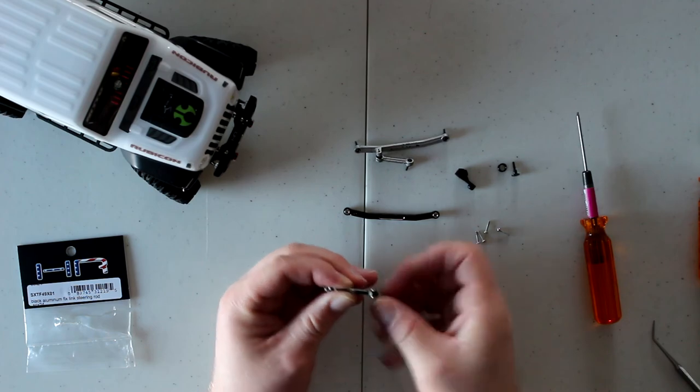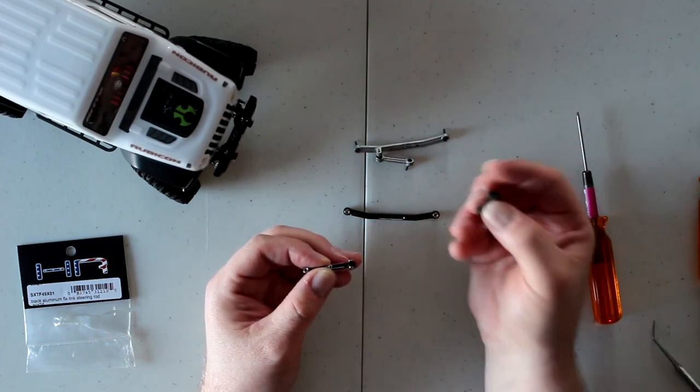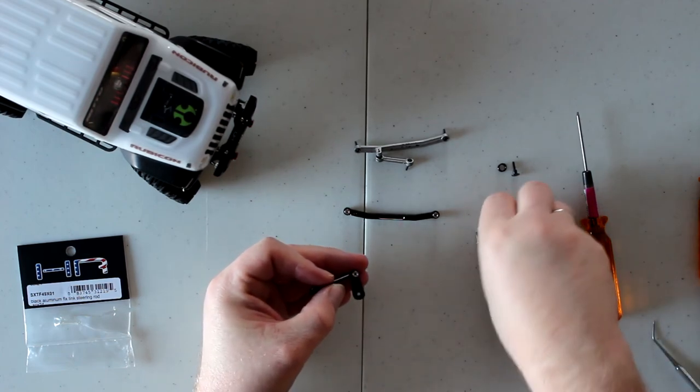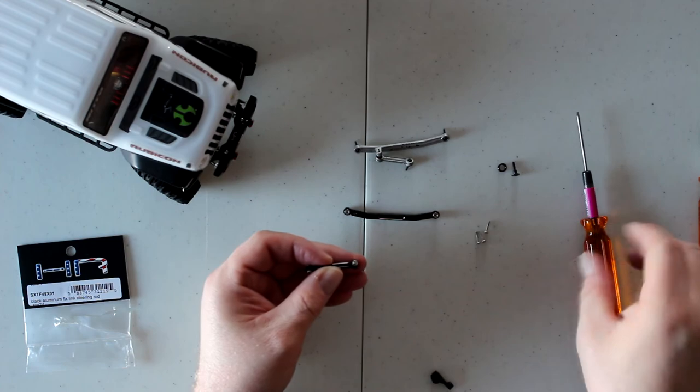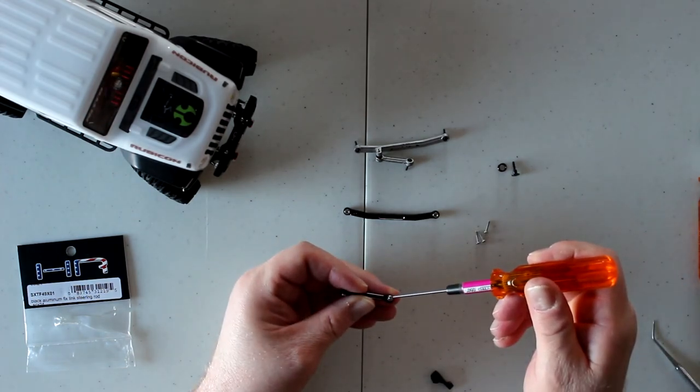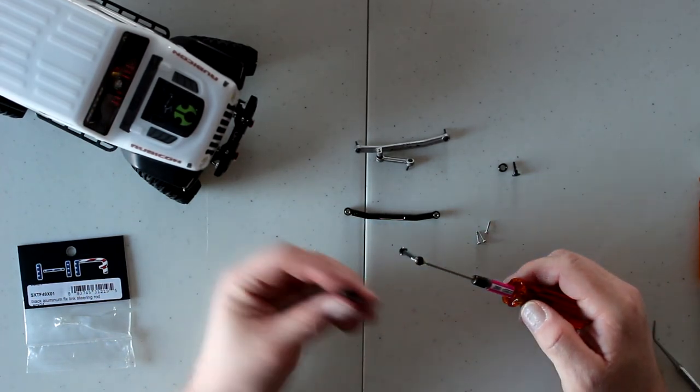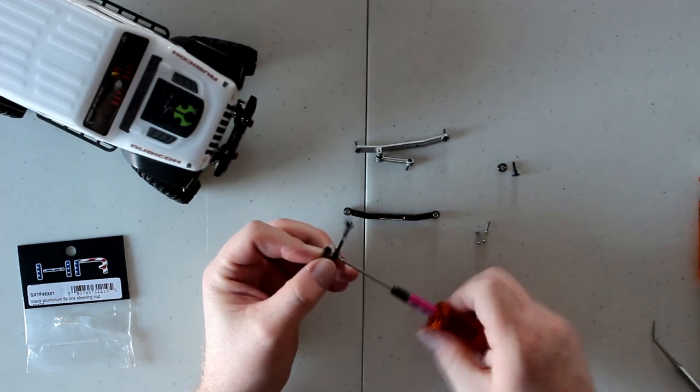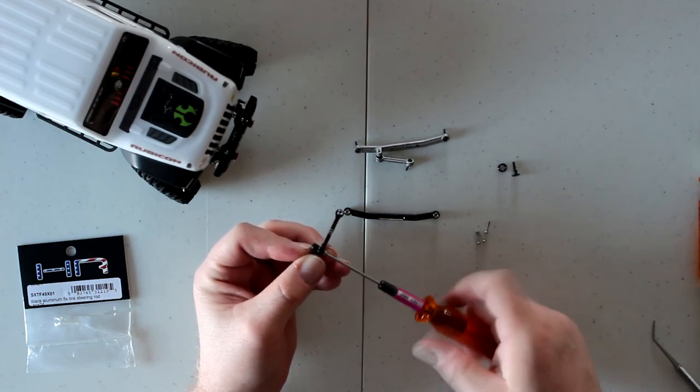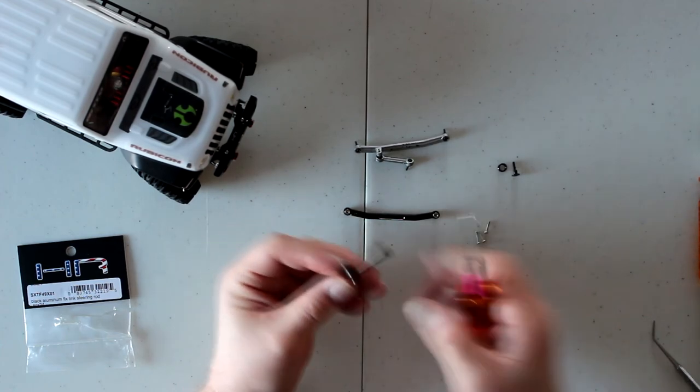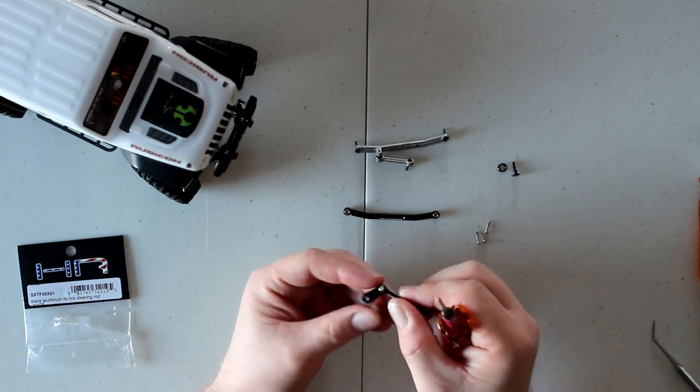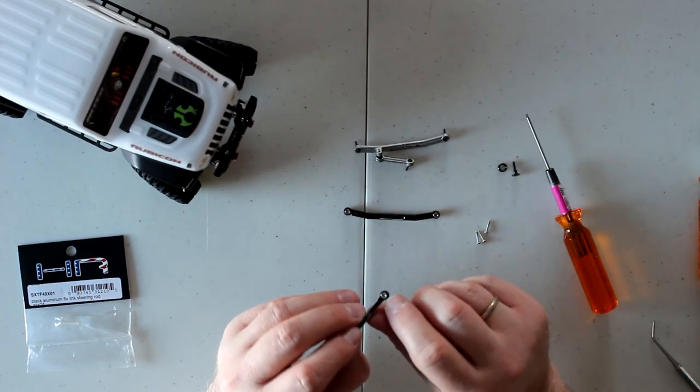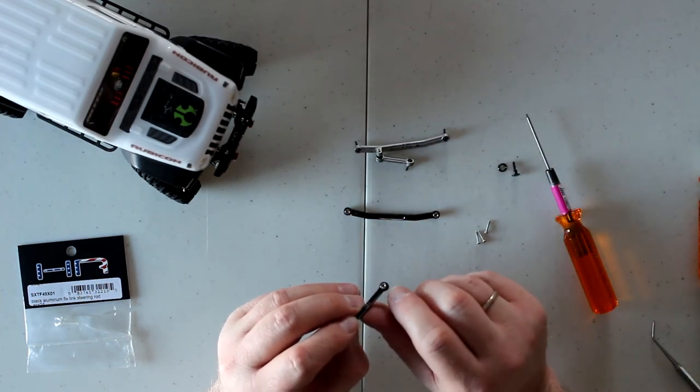It's back in. Now we're going to take our servo saver, go in behind, and screw this guy in the back. There we go.